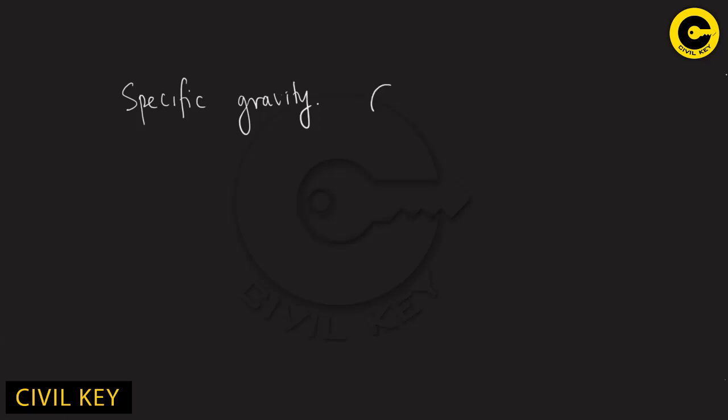What we're doing is a specific video of soil. In the case of soil, Gs is the specific gravity of solids. What is specific gravity? It is a ratio — the ratio of the density of soil to the density of distilled water at a specific temperature. Density divided by distilled water density. This is the basic equation.